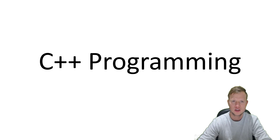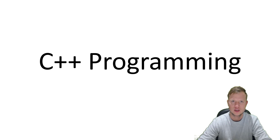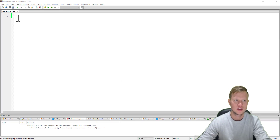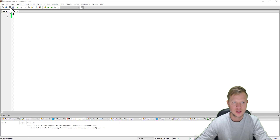The destructor function is there to delete and clear up the object of any dynamic memory that was created. So when the object is deleted and the program ends, all the necessary things would be cleaned up — for instance, dynamic memory that was created. Let's jump into the code and see how the destructor works and how we can use the destructor in a class.